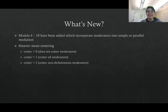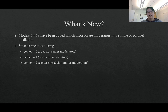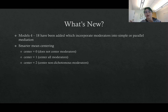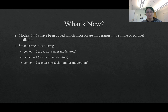An additional thing I added this time is a little bit smarter mean centering. With the center option, the default is zero, which means that none of the moderators are centered. Center equals one will center all of the moderators, including dichotomous moderators, which I think is kind of a funky thing to do. So I added a new option, center equals two, which would center non-dichotomous moderators. So if you have some moderators that are continuous and some that are dichotomous, the center equals two option will center just the non-dichotomous moderators.